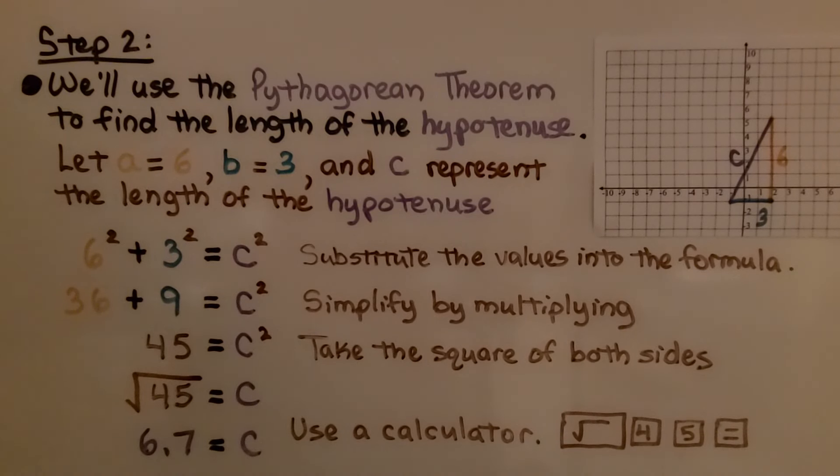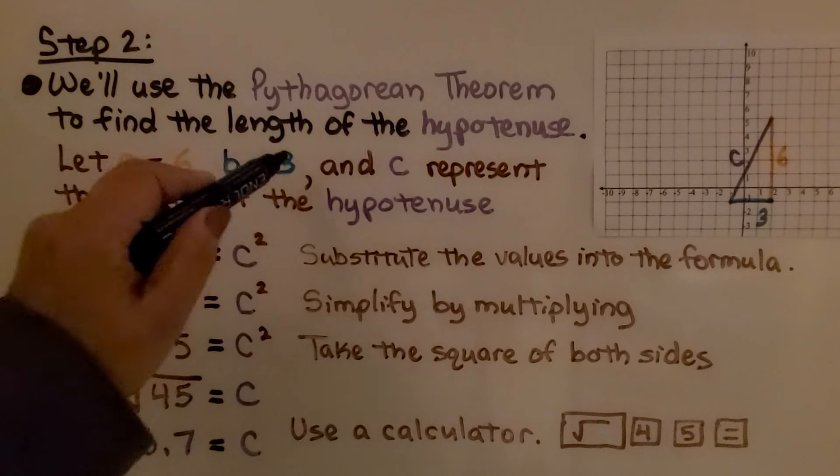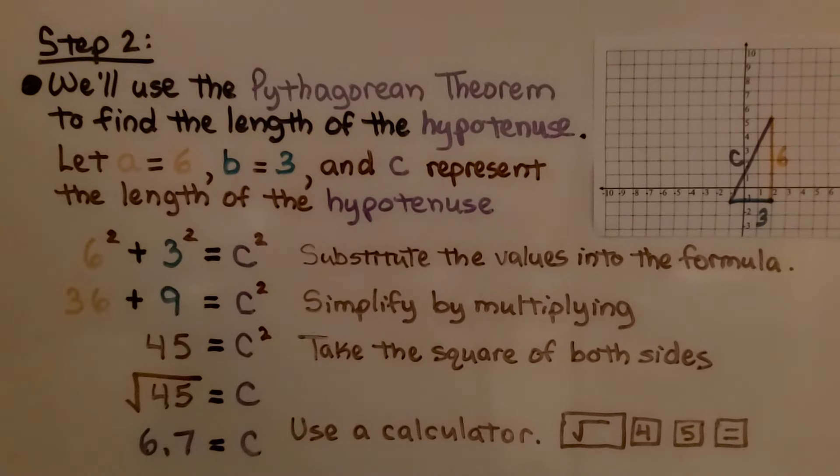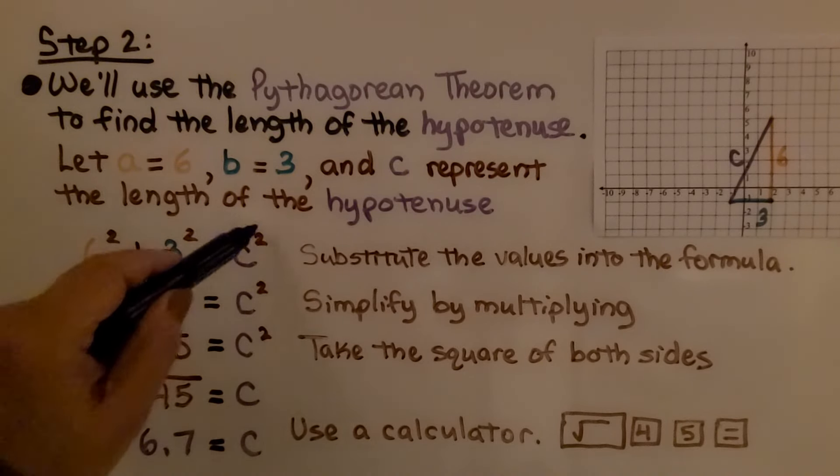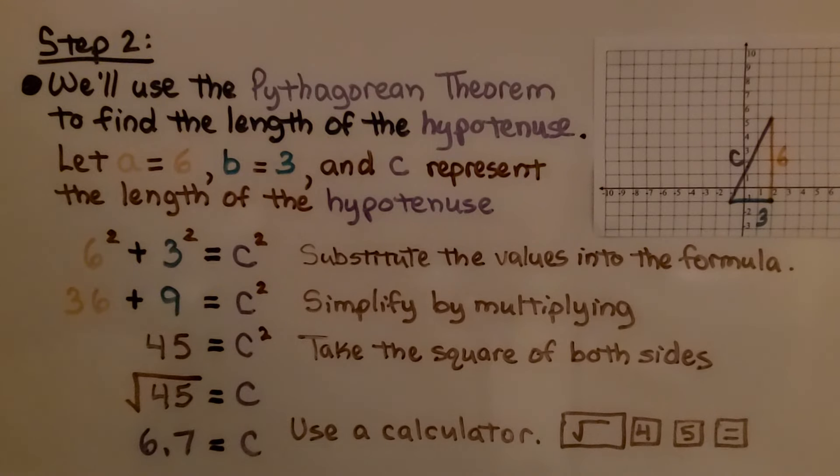For step 2, we'll use the Pythagorean Theorem to find the length of the hypotenuse. We're going to let a equal 6, b equal 3, and c represent the length of the hypotenuse. That gives us 6² + 3² = c². We substitute the values into the formula. 36 plus 9, which is 45.